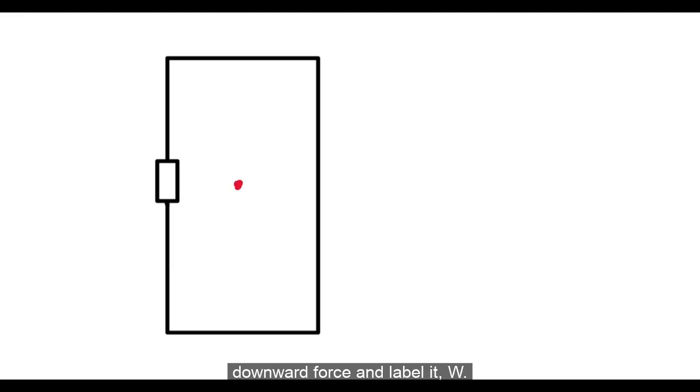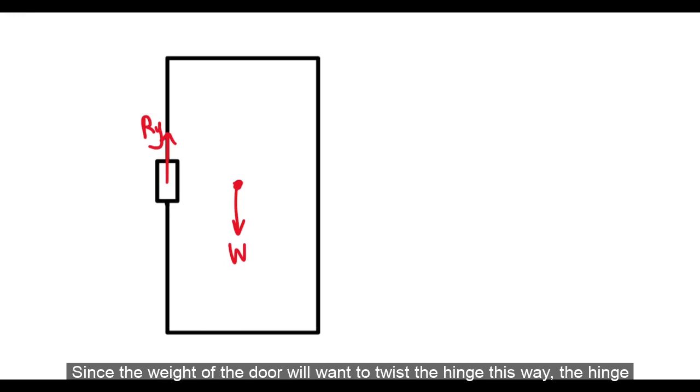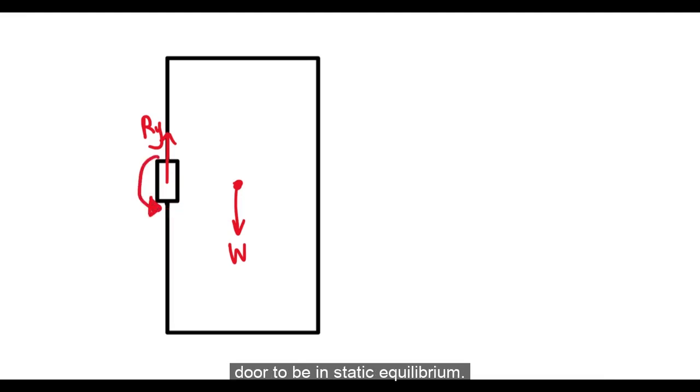To support the weight of the door, the hinge will exert an upward reaction force, which we can call Ry. Since the weight of the door will want to twist the hinge this way, the hinge will have to create a moment going counterclockwise in order for the door to be in static equilibrium.